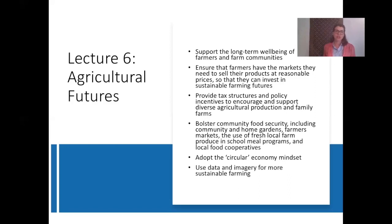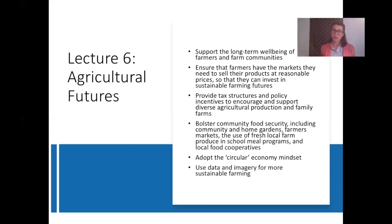Farmers can also increase their share of market value by performing some of the processing functions on-farm before they sell their products. They can also produce high-value specialty crops and build direct marketing opportunities, looking for niche markets for their products. Governments should also consider ways they could restrict consolidation in big business in order to help farmers in the long run, because it is nearly impossible for them to get a fair price when there are monopolies in some of these markets.